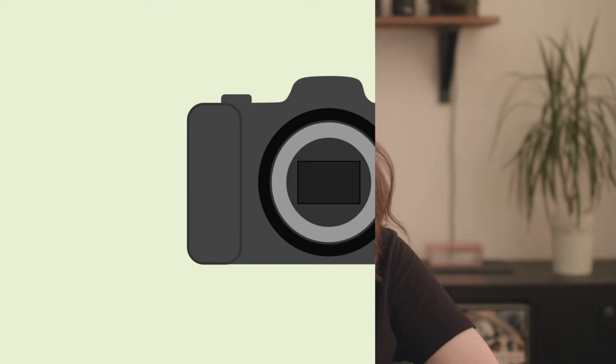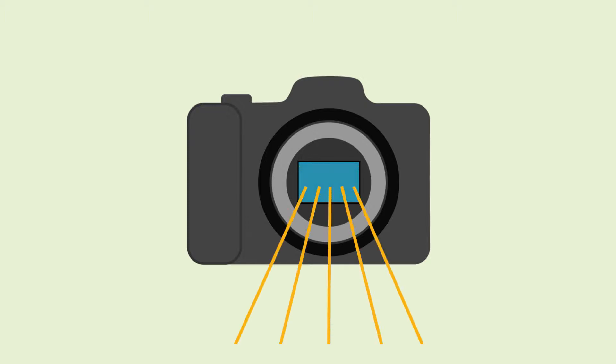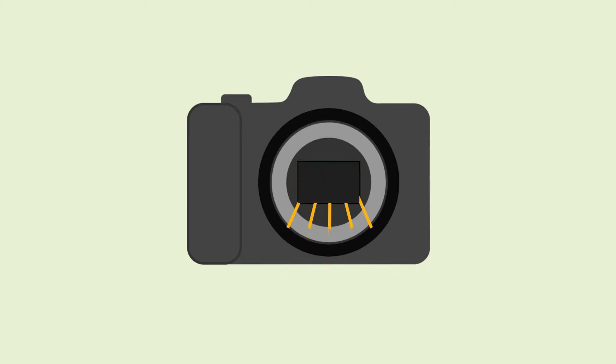The start and end point of the exposure, or your shot, is determined by the shutter, which usually lies in front of the sensor. At the beginning of the exposure, the shutter will reveal the sensor so light can fall onto it. And at the end of the exposure, it will cover it back up.